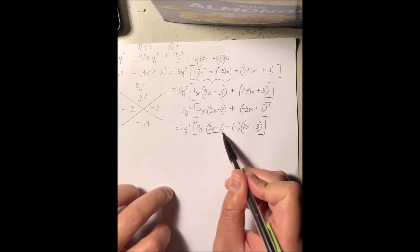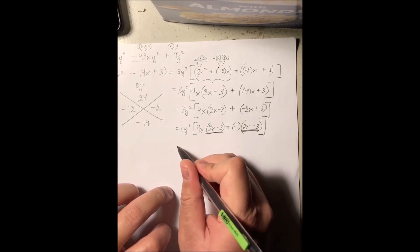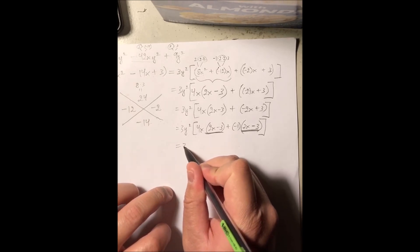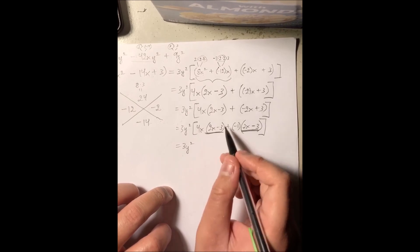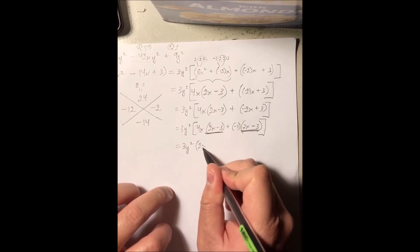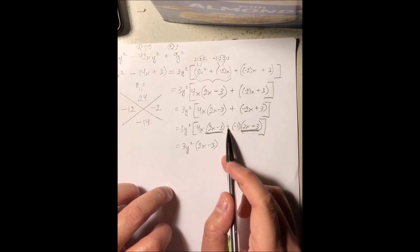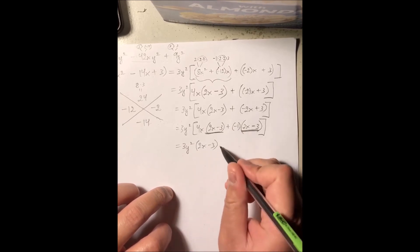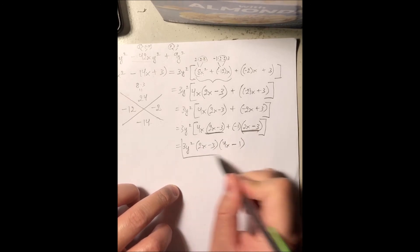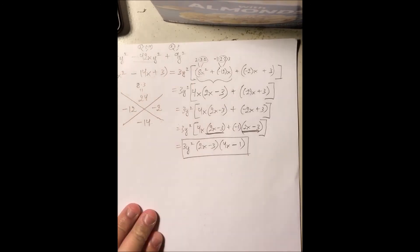We have identical terms, so we factor out (2x minus 3). Keeping the 3y squared and factoring out (2x minus 3), we're left with 4x plus negative 1, which is 4x minus 1. So the fully factored form is 3y squared times (2x minus 3) times (4x minus 1).